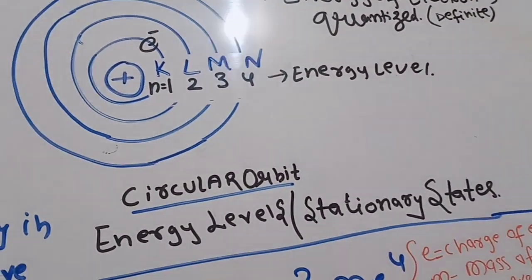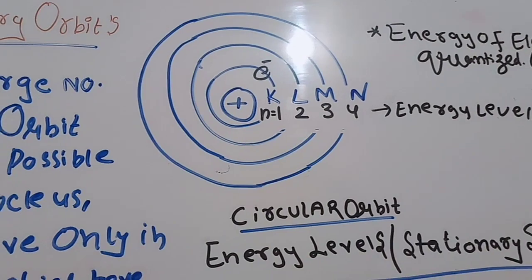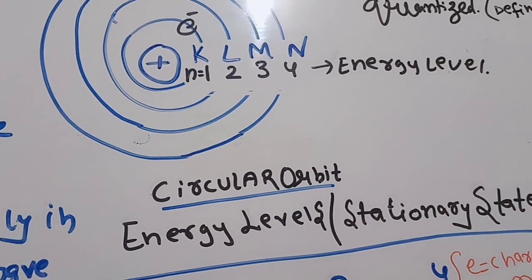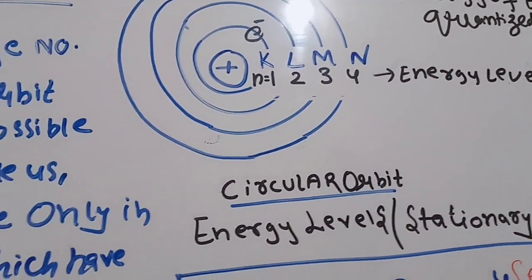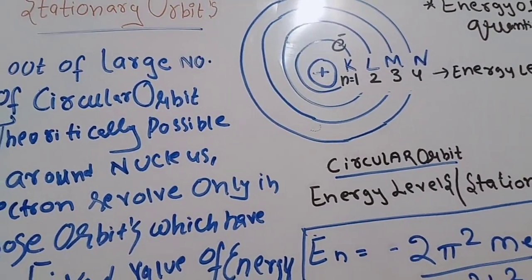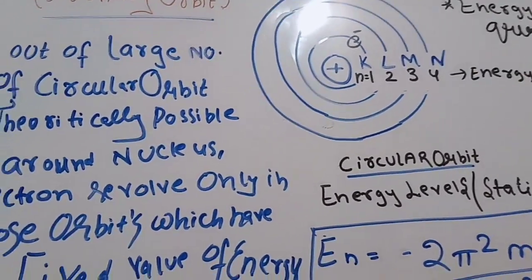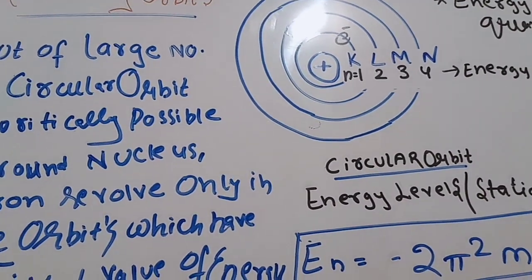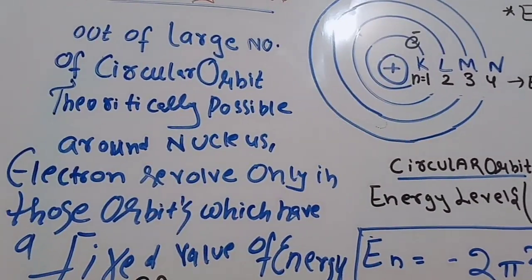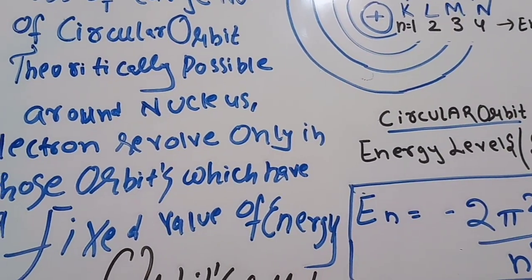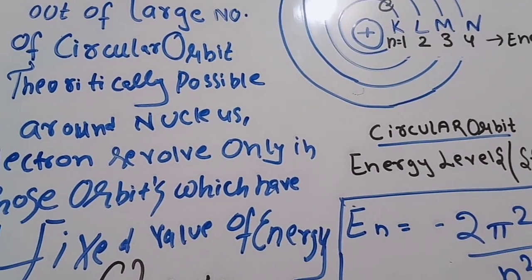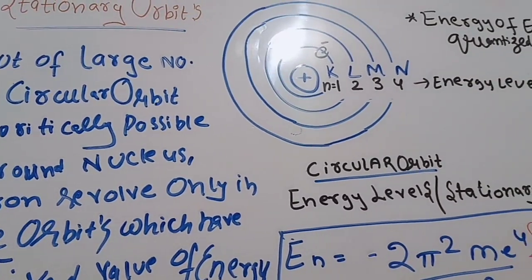Bohr's theory explains the stability of the atom — which was a drawback in Rutherford's model. It also explains the spectrum of the hydrogen atom, which we will cover in our next video. I hope you understand the concept of Bohr's model. There are many numericals from this concept which we will see in our next video. Thank you — if you like, please share.